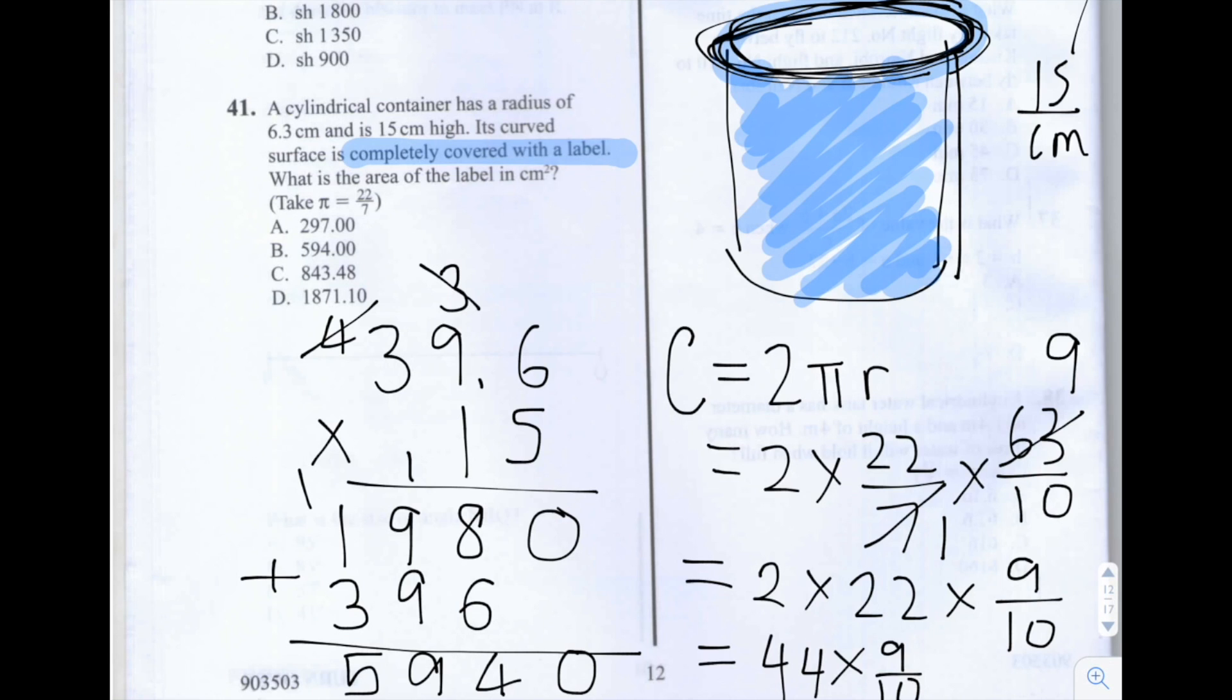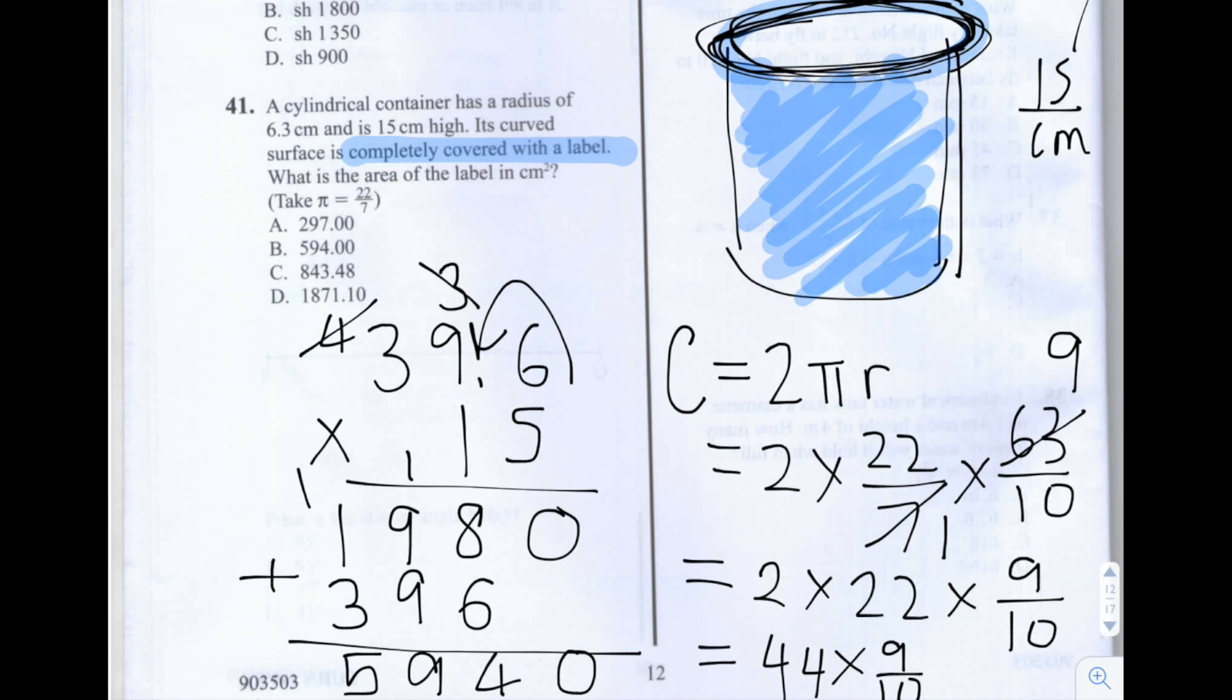So that means we need to make sure that the one decimal place moved here. That means we've got to move the answer one decimal place to the left as well. So the answer we get is 594.